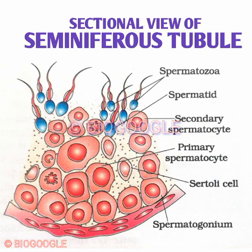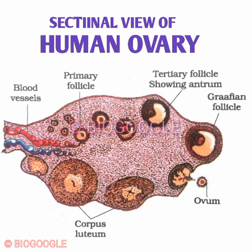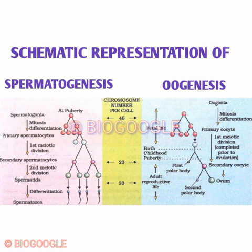Next is the structure of human sperm — the diagram may be asked for five marks, so label all parts properly. Next is the sectional view of a human ovary — show all stages of the follicles: primary follicle, secondary follicle, tertiary follicle, Graafian follicle, and corpus luteum must not be missed. This will be asked for five marks.